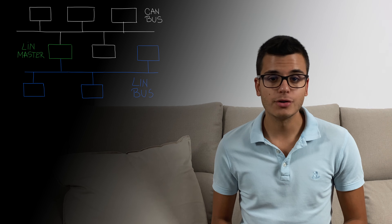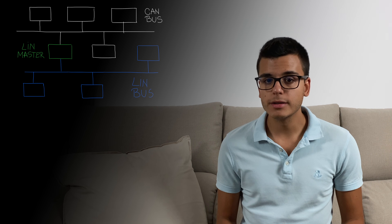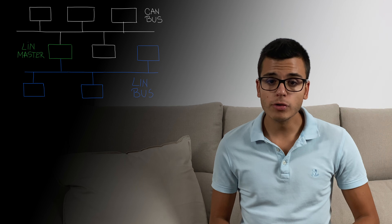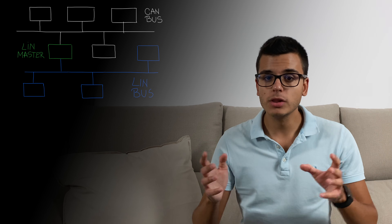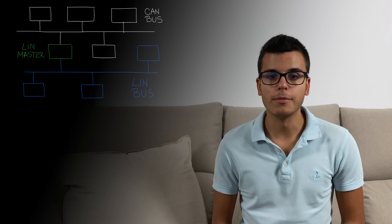Usually LIN would be used in non-critical applications such as the rain sensor, light sensor, climate control sensor, window control, mirror control, steering wheel stocks and many other sensors. Typically the LIN master of a network would also be the node that connects to the CAN bus in order for each LIN subnet to be connected to other networks of the car.